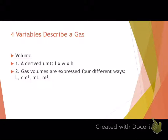The next variable used to describe a gas is its volume. Volume is the amount of space an object occupies. Gases, because they have a lot of energy and move very fast, are mostly empty space, so volume is an interesting variable because we can manipulate it a lot more than we see in solids.